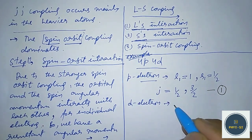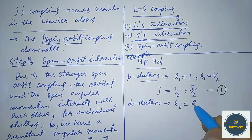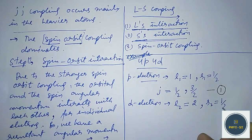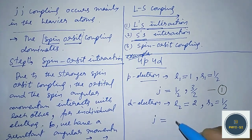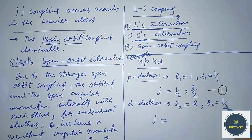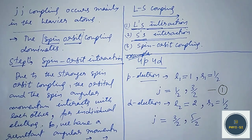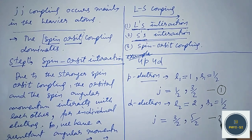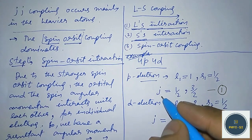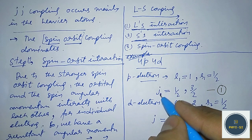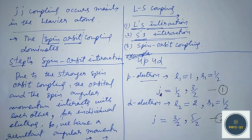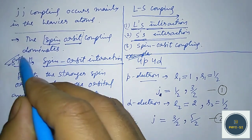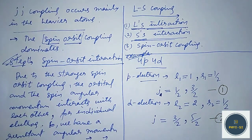For the D electron — the second electron — L₂ = 2 and S₂ = 1/2. The possible J values will be 2 − 1/2 = 3/2 and 2 + 1/2 = 5/2. So we have step 1 done: the P electron gives J = 1/2 or 3/2, and the D electron gives J = 3/2 or 5/2.